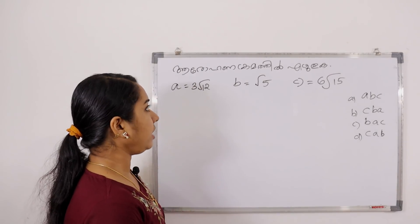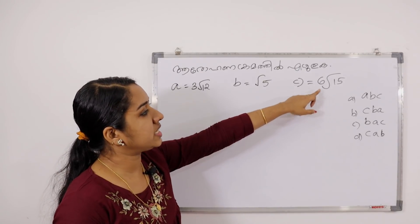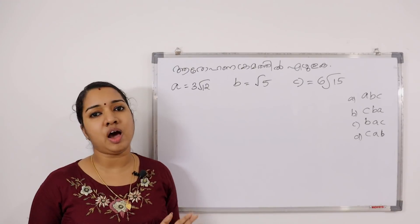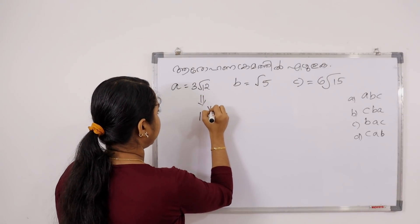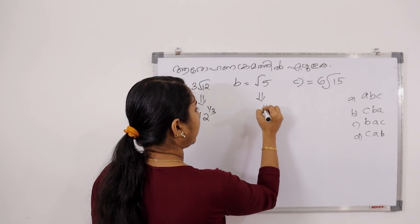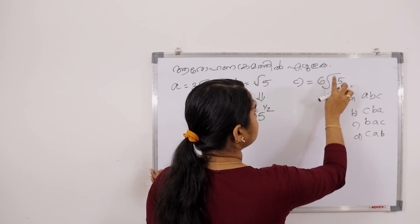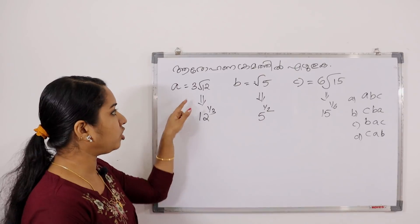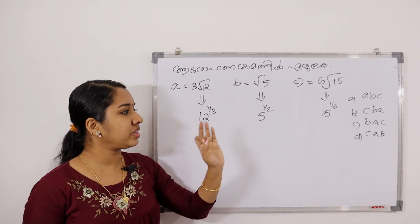Let's look at the answer. In the sixth grade: a is equal to 3√12, b is equal to √5, c is equal to 6√50. The sixth grade is 1, the eighth grade is 1. If you want to write the cube root of 12, it's 12^(1/3) which becomes 12√3. The square root of 5 is 5^(1/2), and we write the square root of 15 as 15^(1/2). If you want to write the square root of 16, it goes away as 1.